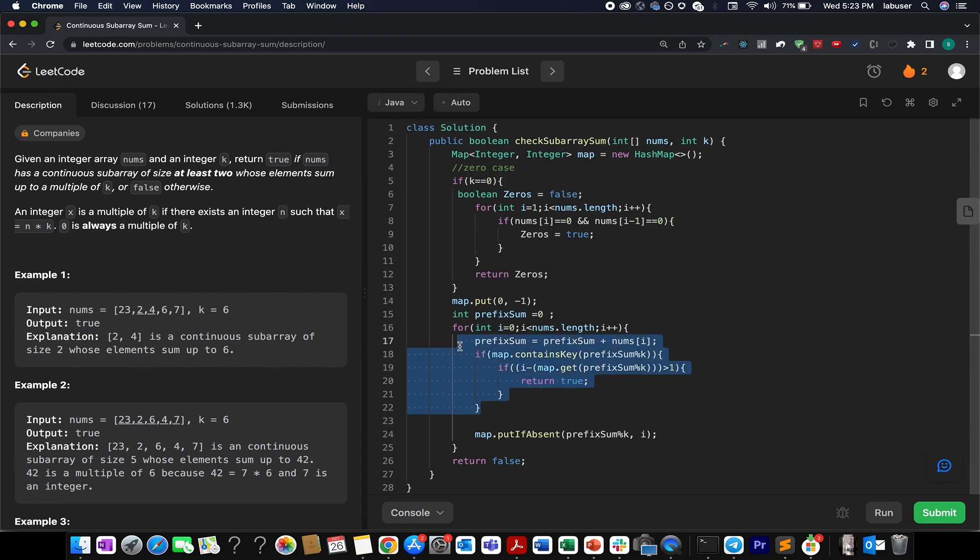Otherwise I proceed ahead and make an entry into the map wherein I add the remainder which is prefix sum modulus k and the index, the current index under consideration into the map, in case this prefix sum remainder doesn't exist priorly.